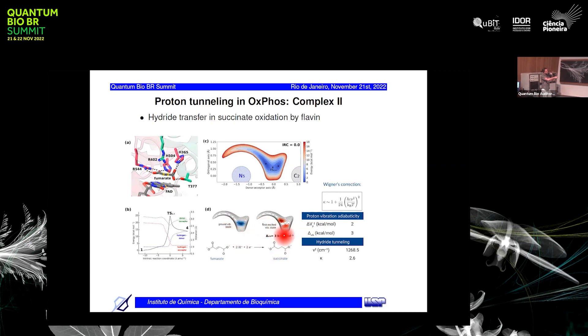We calculate the proton potential and then we calculate the vibrational function of the transferred proton or the hydride here. Now we see the ground state and excited state vibrational functions. We find for this particular example that the splitting between the ground state and the first vibrational excited state, three kilocalories per mole, is larger than the barrier in the proton potential. This characterizes a proton vibrationally adiabatic transfer. We can use the Wigner correction to estimate kappa, which is the transmission factor for this hydride transfer.